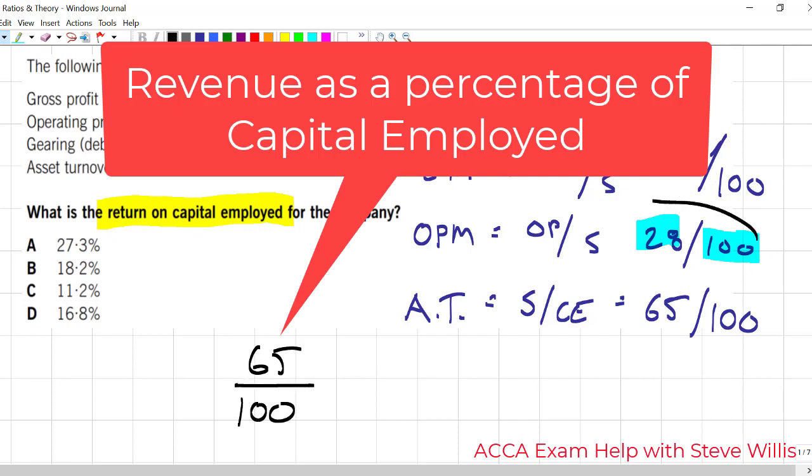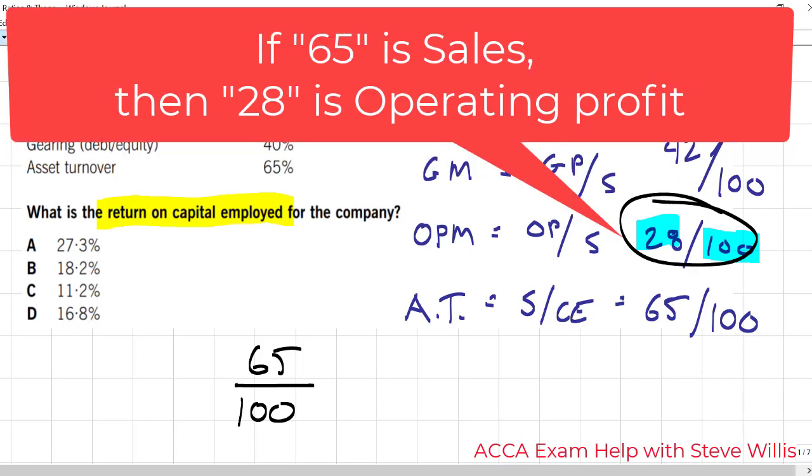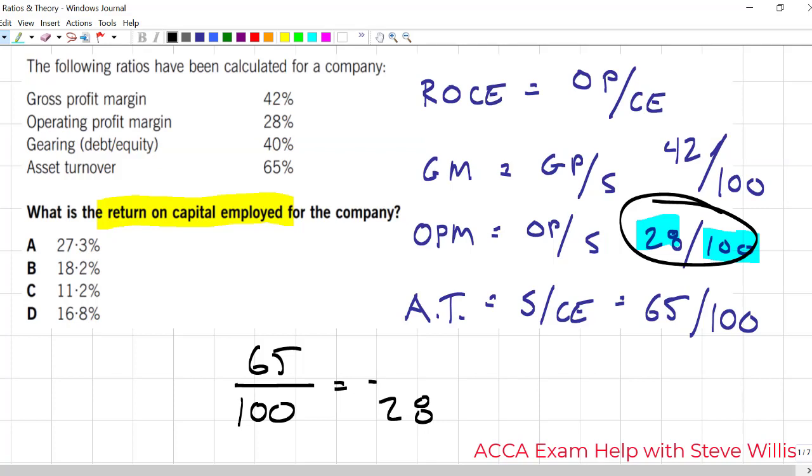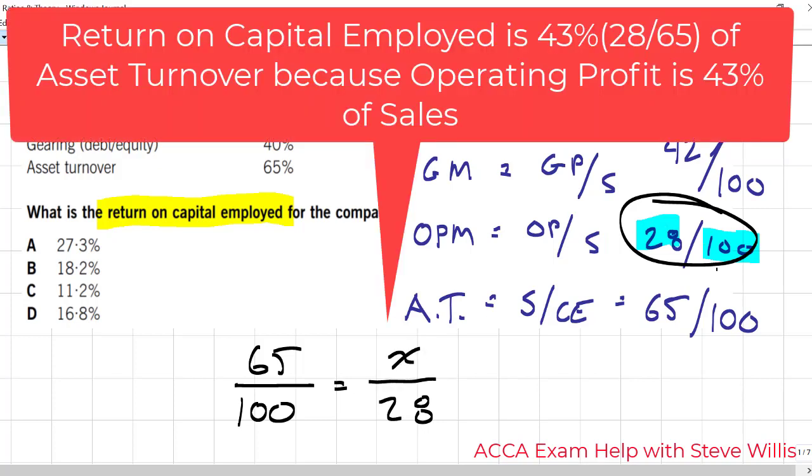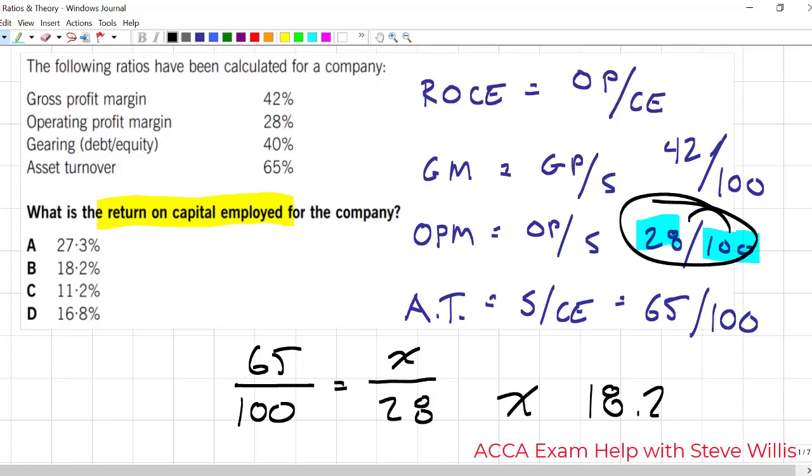If we come back here to that line, if we say that the capital employed will hold the same ratio, we could then say that's going to be equal to x over 28. The 100 to the 28, and if we do the math, x comes to 18.2. And that is my answer for return on capital employed.